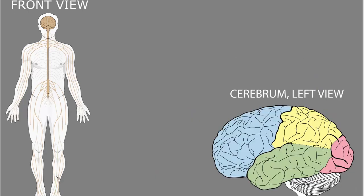Most types of sensory information travel through chains of neurons to sensory areas of the cerebral cortex for conscious perception. The cerebral cortex is this outer layer of neurons on the top part of the brain — the cerebrum.